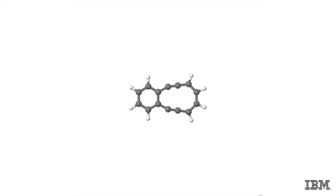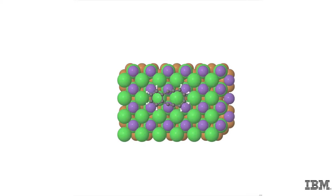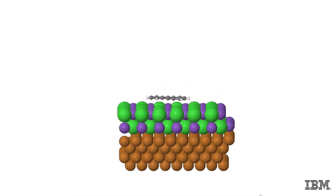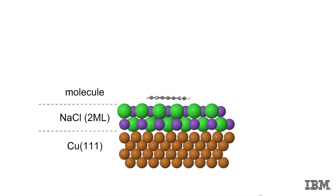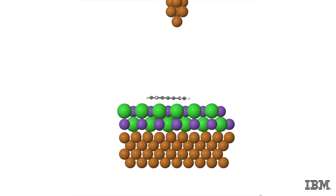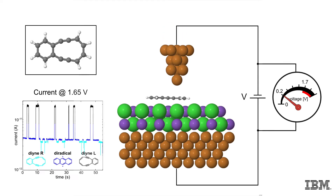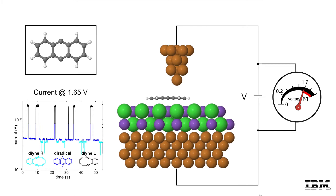In our experiment, the molecule is adsorbed on a two-atomic layer thick sodium chloride film. This insulating support in a cryogenic environment is essential to stabilize highly reactive intermediates. To trigger the reaction, we position the scanning probe tip above the molecule. At low bias voltage, the molecule retains its structure. From a certain threshold voltage on, however, the tunneling electrons carry enough energy to induce the Bergmann reaction.